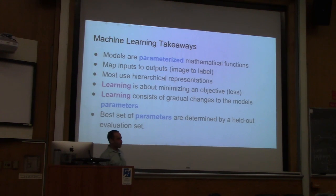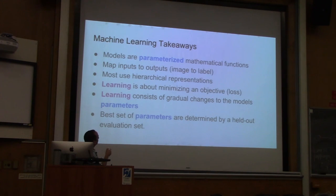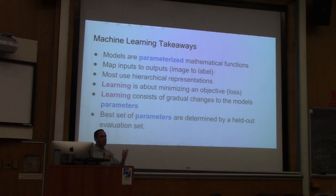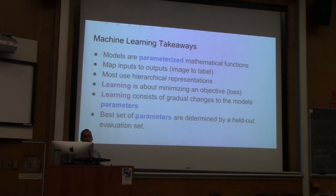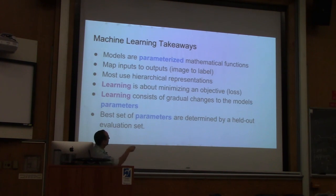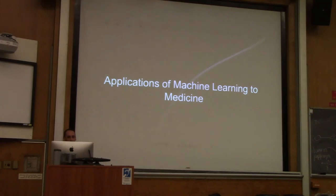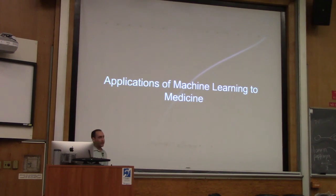That's the end of the machine learning overview. Major takeaways: these models are big mathematical functions parameterized by weights; learning is finding the right set of parameters; the successful models today use neural networks — hierarchical representations that map inputs to outputs — and the right parameters are found by minimizing some loss function. Now I'm going to shift gears and talk about how this is actually used in medicine today.